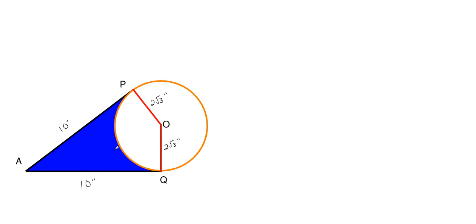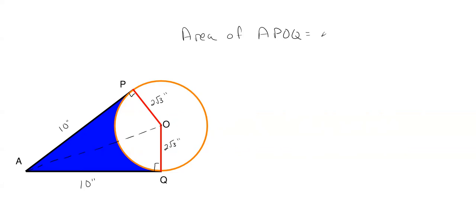Now, if we draw a line from A to O, because these lines are tangent to the circle, we have 90-degree angles forming. We can get the area of each of the smaller right triangles, which is one half base times height, where 10 is our base and 2 square roots of 3 is our height. Since the kite shape APOQ consists of two such right triangles, the total area is just base times height: 10 times 2 square roots of 3, giving 20 square roots of 3 inches squared for this entire kite region.